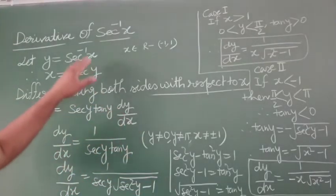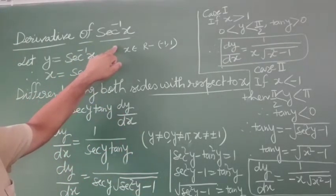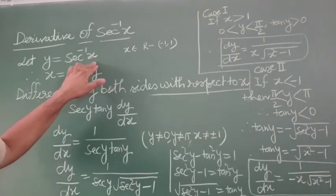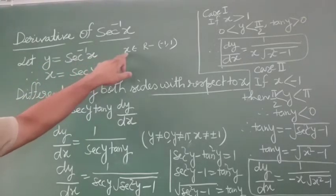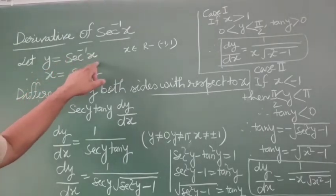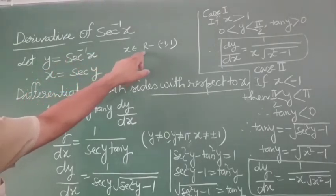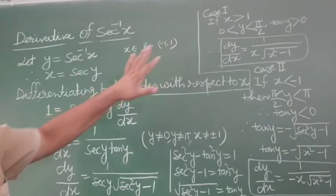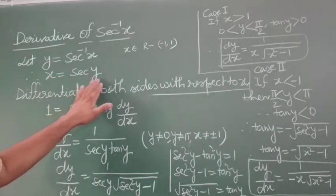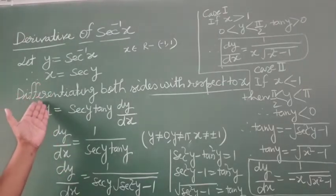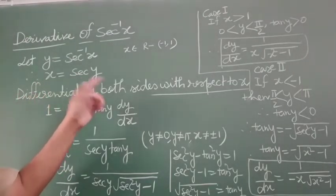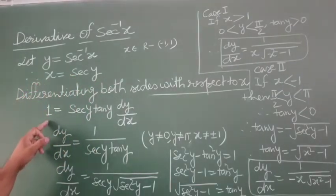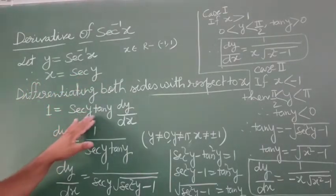We are going to find out the derivative of sec inverse x. Let y equals to sec inverse x. For sec inverse x, x must belong to R minus the interval minus 1 to 1. So x equals to sec y. Now differentiating both sides with respect to x: the derivative of x is 1, and the derivative of sec y is sec y tan y, and y derivative we cannot obtain, so we write dy by dx.